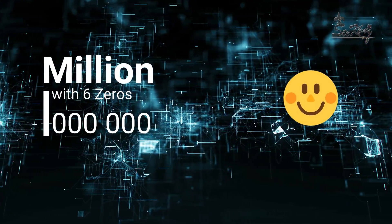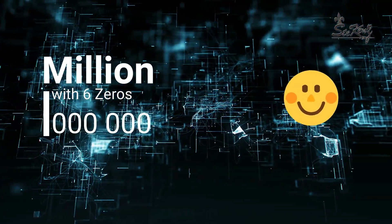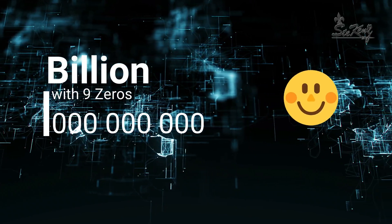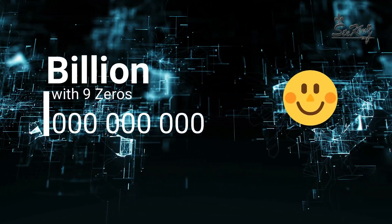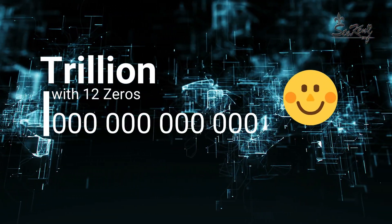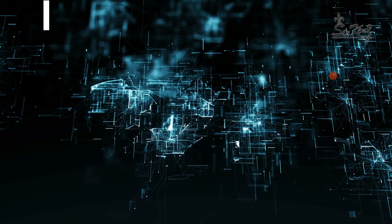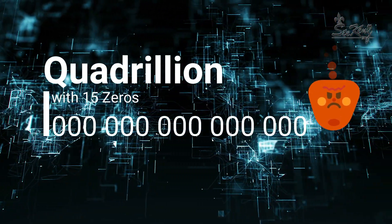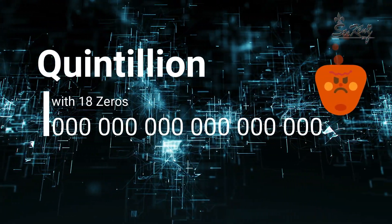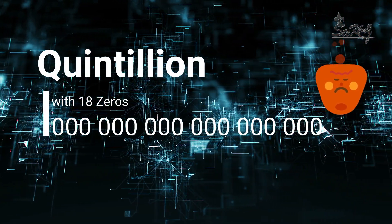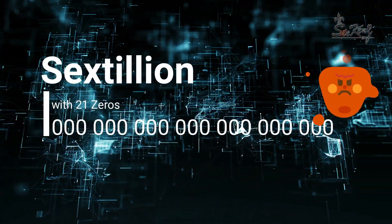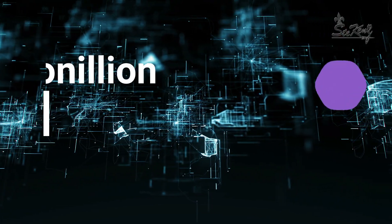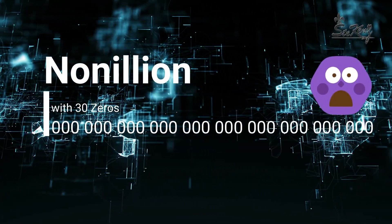Now in the international system: one with six zeros is called million, one with nine zeros is called billion, one with twelve zeros is called trillion, one with fifteen zeros is called quadrillion, one with eighteen zeros is called quintillion, one with twenty-one zeros is called sextillion, and one with thirty zeros is called nonillion.